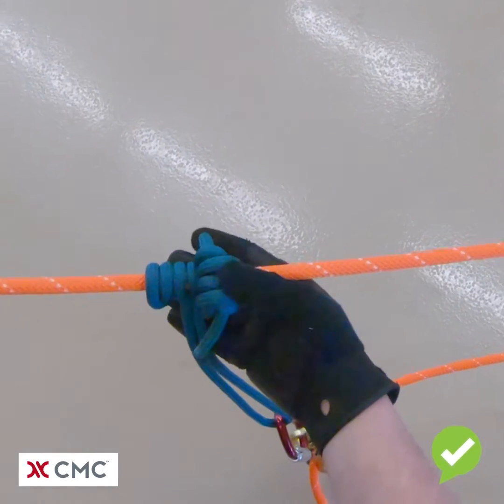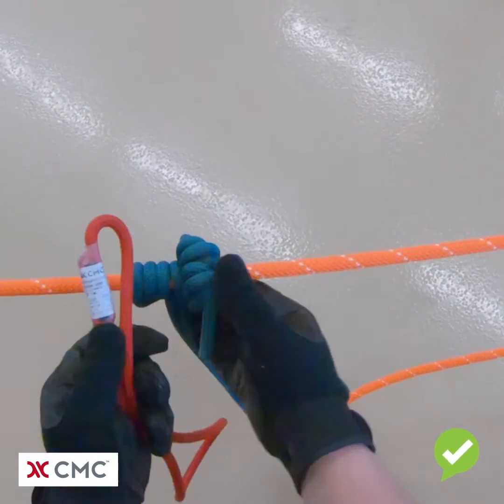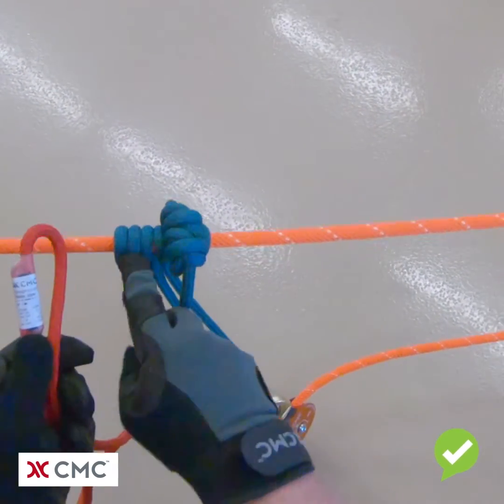Whether it be a double fisherman knot in a tied prussock or a pre-sewn prussock, we don't want to incorporate either of those components into the prussock hitch.